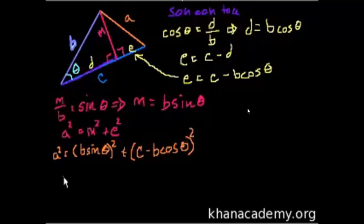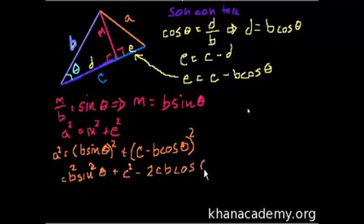So A squared is equal to M squared. M is B sine of theta. So it's B sine of theta squared plus E squared. Well E we figured out is this. So it's plus C minus B cosine theta squared. Now let's just chug through some algebra. So that equals B squared sine squared theta. Sine squared theta just means sine of theta squared. Plus, and let me just FOIL this out. C squared minus 2CB cosine theta plus B squared cosine squared theta. Right? I just expanded this out by multiplying it out.